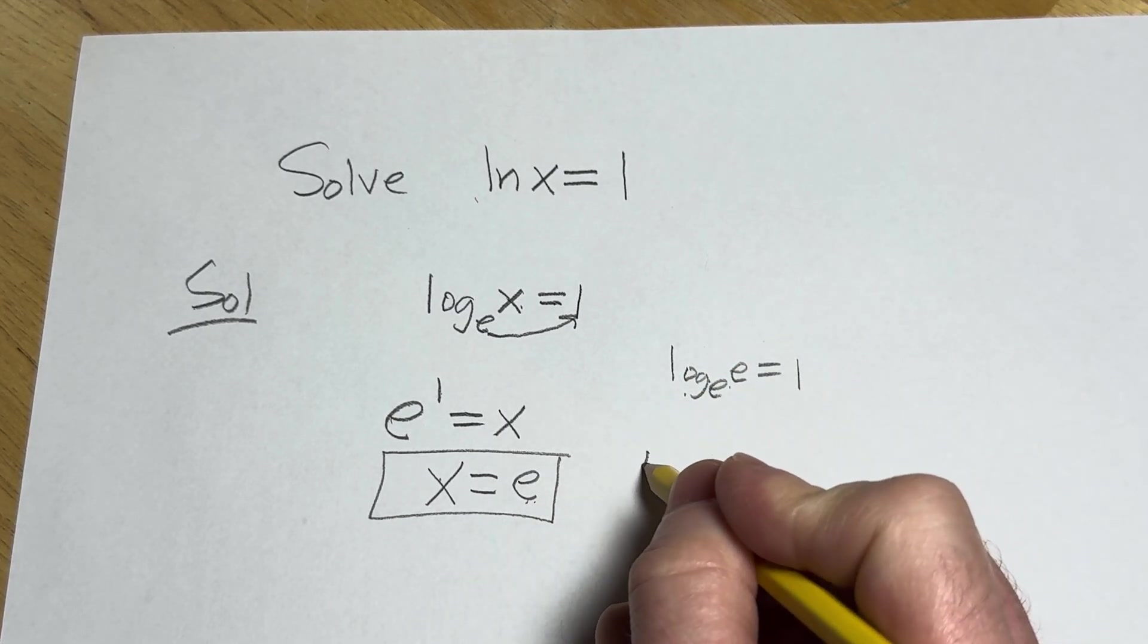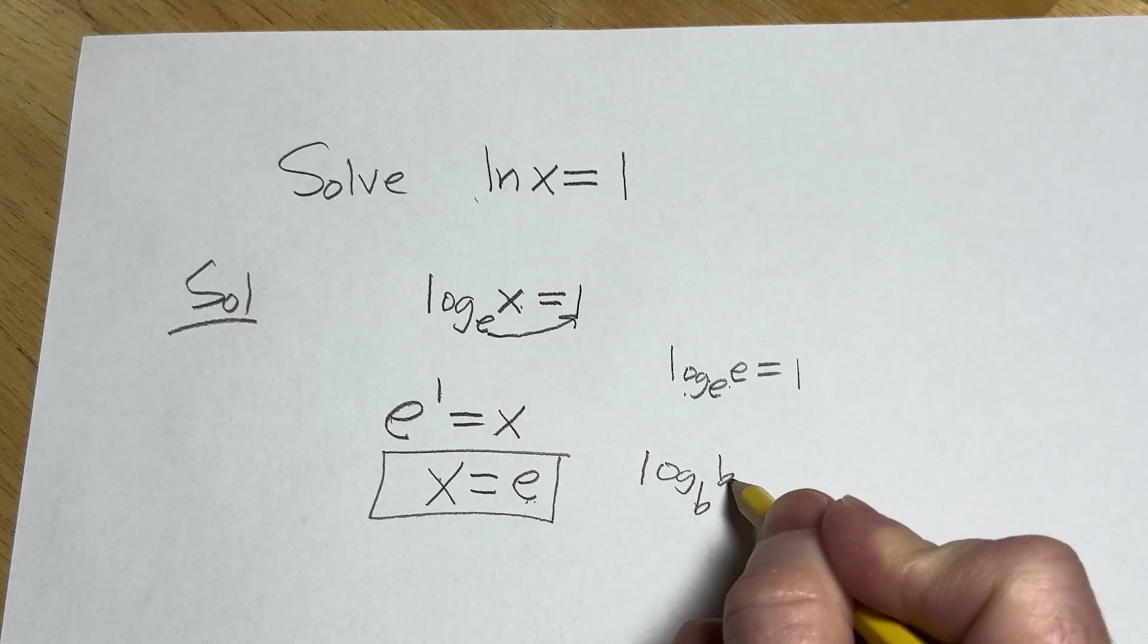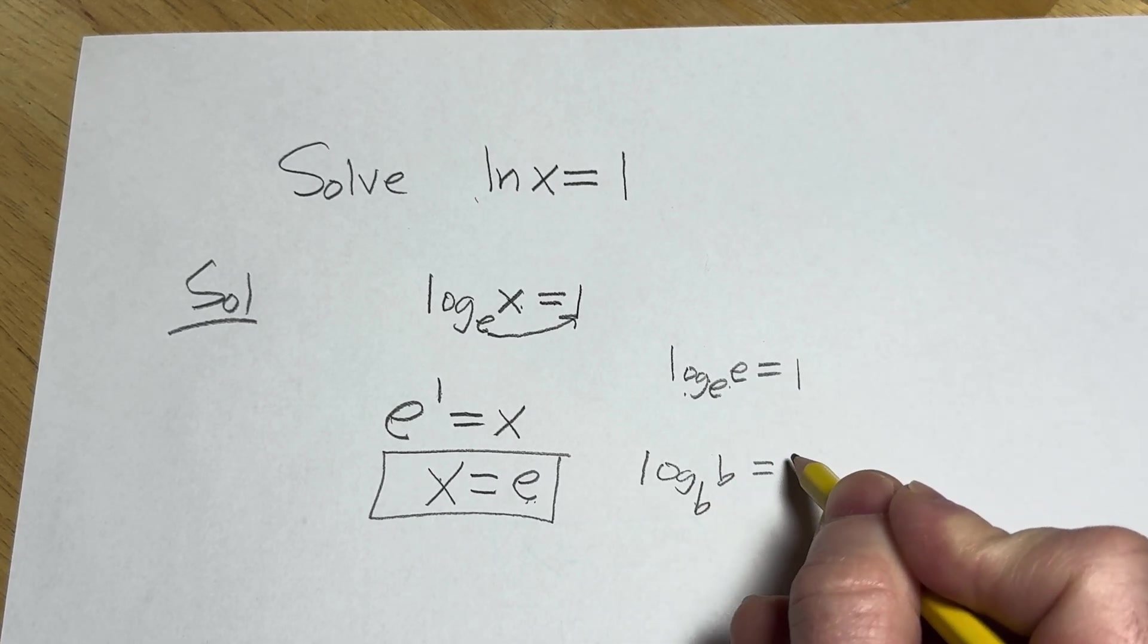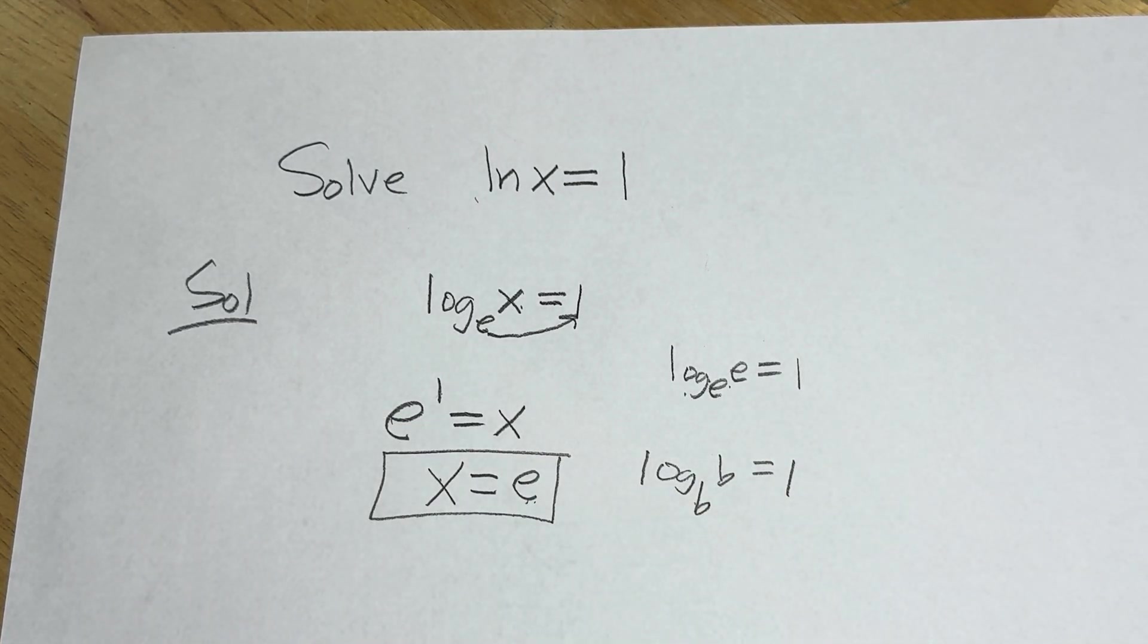In general, if you have log base b of b, you say b to what power is b? It's 1. So that works out pretty well. Take care.